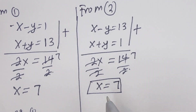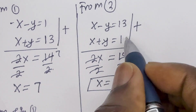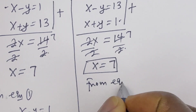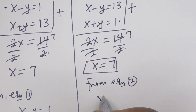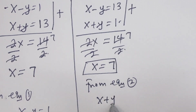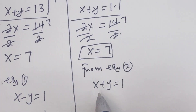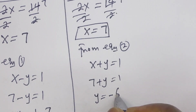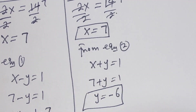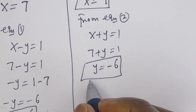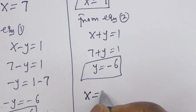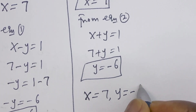We've gotten the value of x. We can solve for y using either equation 1 or 2. Let me make use of equation 2. From equation 2, x plus y equals 1. When x is 7, we have 7 plus y equals 1, so y equals minus 6. Therefore, from the second case, x equals 7 and y equals minus 6.